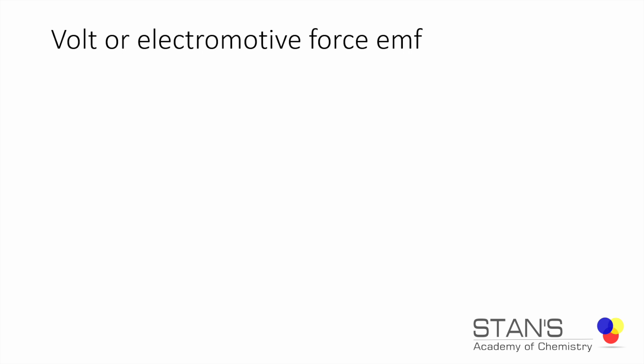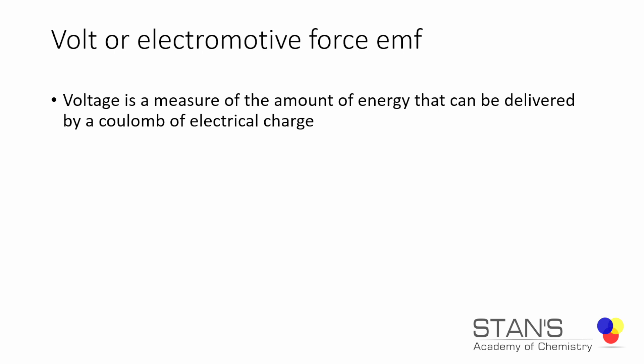The next term that we need to define is the voltage or volt, usually also called the electromotive force or emf. The voltage is a measure of the amount of energy that can be delivered by a coulomb of electric charge. One volt equals one joule per coulomb, and joule is a unit of energy. So we can see that the energy that is possessed by the electrons when every coulomb of charge is flowing through is what we're referring to here.